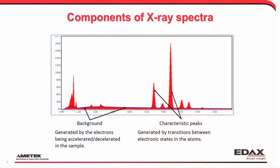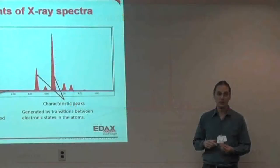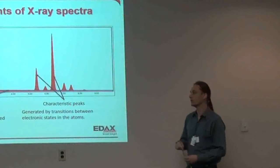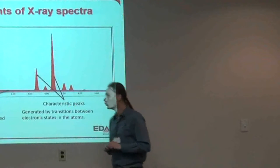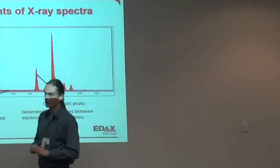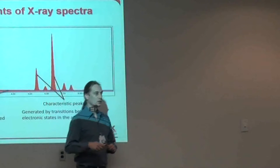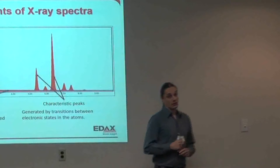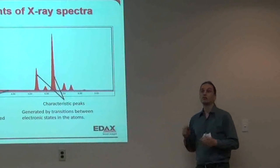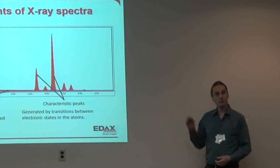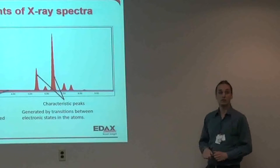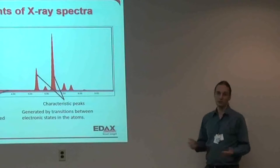Depending on what system you have, you might only see the peaks. Some vendors filter out the background altogether — they apply a top-hat filter and get rid of it. That depends on the philosophy behind it. The background is not used to identify the sample per se, but there is still information hidden in there. There are pros and cons to both approaches.